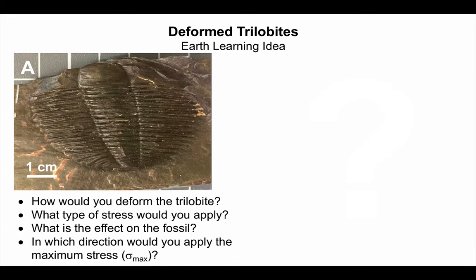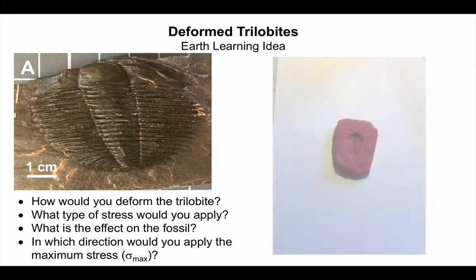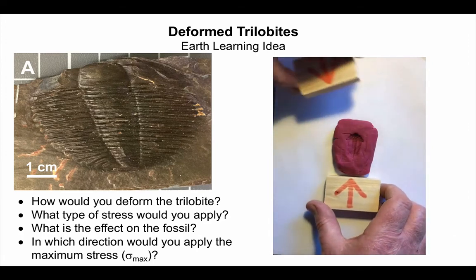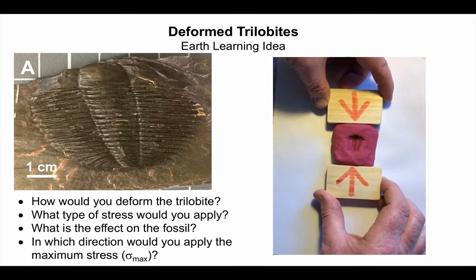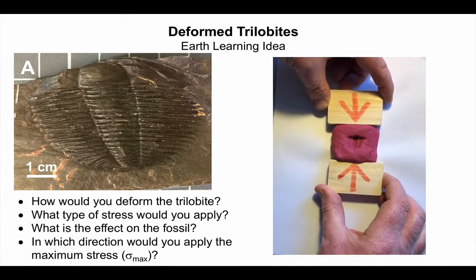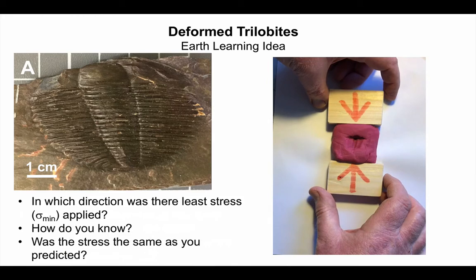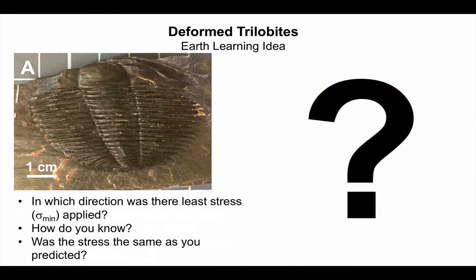If we look at this, we can see that we're compressing the fossil. We've got the forces shortening the fossil along its long axis, and it's getting wider on its short axis. So what direction do you think there was least stress on your deformed fossil? We call this sigma min. How do you know that that is the direction of least stress, and was this done in the same way that you predicted?